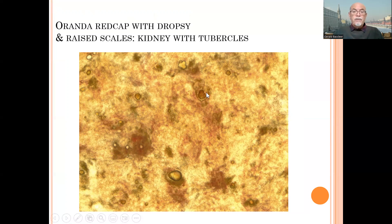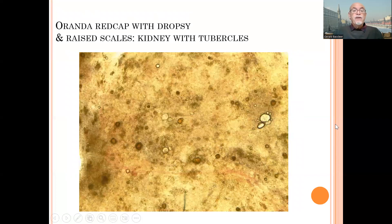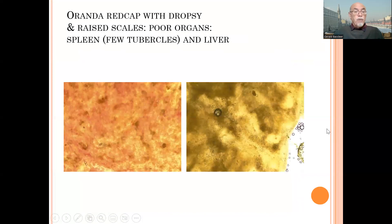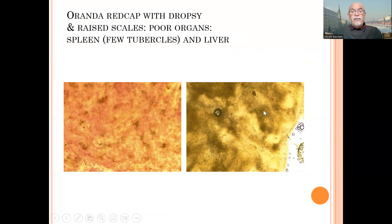There are larger tubercles here and smaller ones in a smear of the kidney tissue. These are bacterial infections encapsulated by the organ's defensive reaction. We also found some tubercles in the spleen, and the liver looked very weak and poor, with whitish areas.